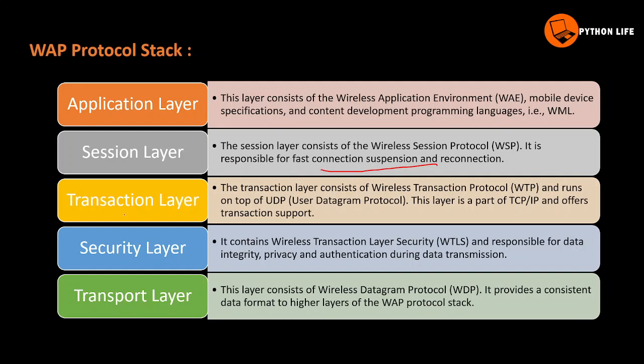The Transaction layer consists of the Wireless Transaction Protocol (WTP). It runs on top of UDP — the User Datagram Protocol. This layer is part of the TCP/IP stack, and offers transaction support. WTP provides wireless transaction control for reliable data exchange.